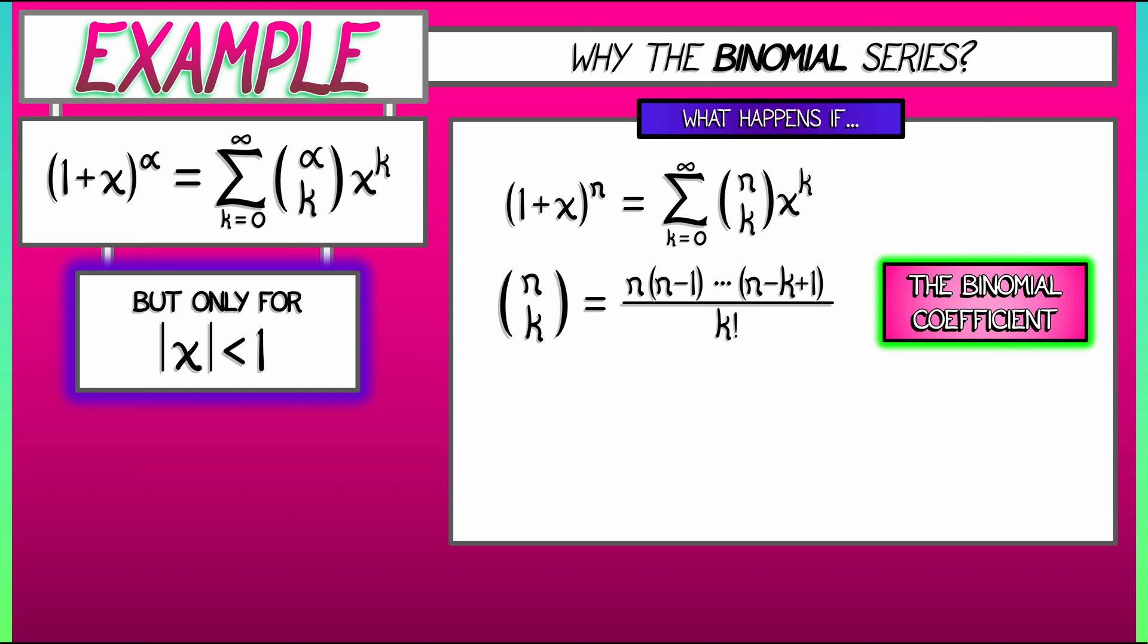But look, when k is bigger than n, what is happening? Oh, you get a 0 up there in the numerator. For k bigger than n, this coefficient vanishes. That means that this infinite series terminates. It's a finite series.